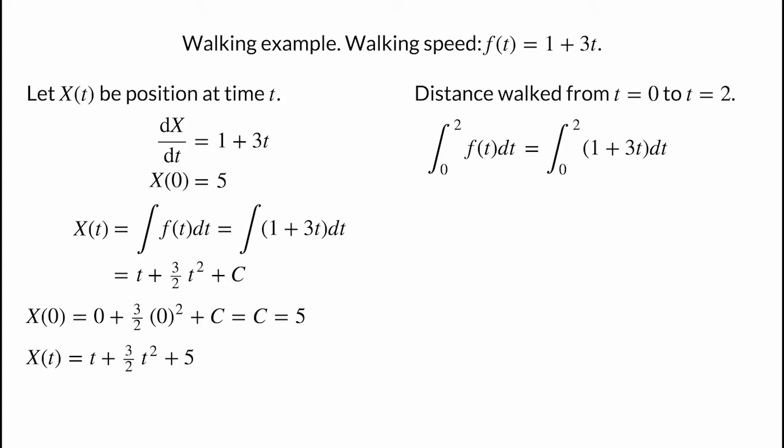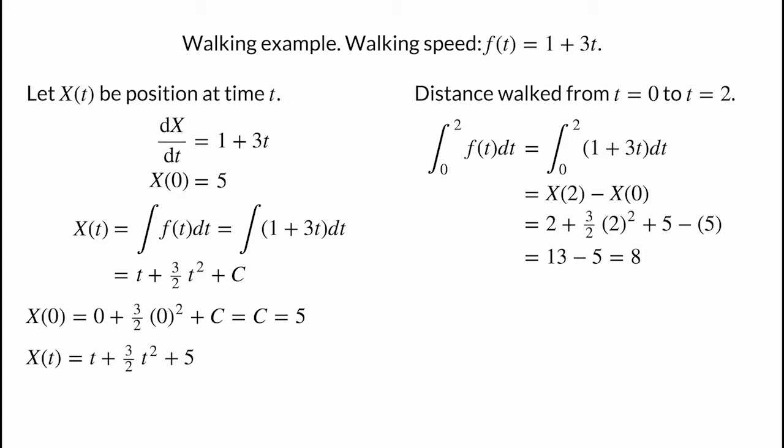Turning to the definite integral, we want to compute the distance you traveled in the first two hours. This distance is the integral from 0 to 2 of f of t dt, or the integral from 0 to 2 of 1 plus 3t dt. Instead of computing a Riemann sum, we'll use the fundamental theorem of calculus, which says the definite integral — the distance walked — is the change in the indefinite integral, or your position. The distance walked in the first two hours is x of 2 minus x of 0. Using the formula for x of t, x of 2 is 13 and x of 0 is 5, giving a difference of 8. You walked 8 kilometers between t equals 0 and t equals 2.